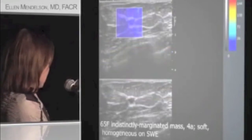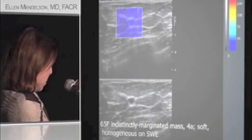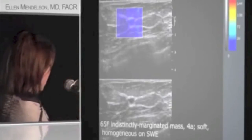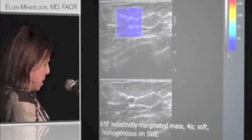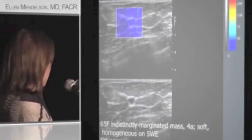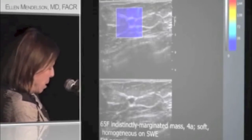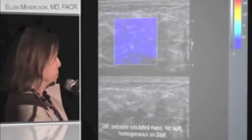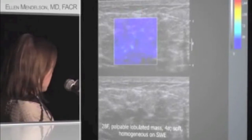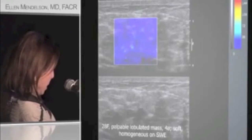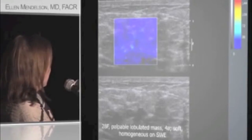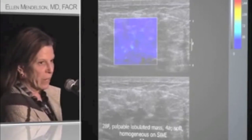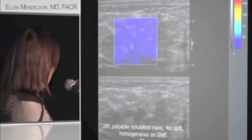A 65-year-old woman with an indistinctly marginated mass categorized as BI-RADS 4A had a soft, inhomogeneous appearance on shear wave elastography and was biopsied — it would have been downgraded. The result was fat necrosis, concordant with both the BI-RADS and the e-features. A 28-year-old with a small palpable lobulated mass was given 4A on BI-RADS, but the e-color and e-homogeneity were both benign. This was a fibroadenoma — a correct result.